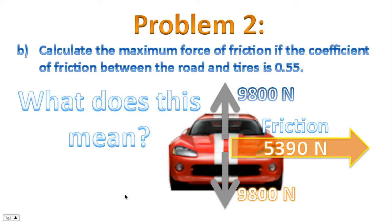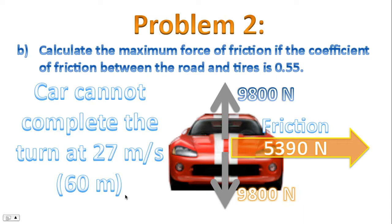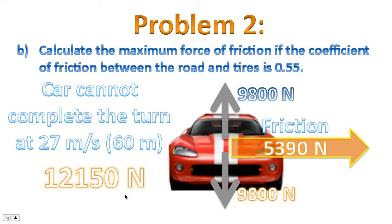What does this mean? The car cannot possibly complete the turn at 27 meters per second for a 60-meter radius — it is physically impossible. To complete this turn the tires would have to exert 12,150 newtons, but the maximum those tires can exert is only 5,390 newtons. We have exceeded the physical limitations of the tires. If you attempt that turn at 27 meters per second with a 60-meter radius, the car will spin out — we've exceeded the maximum available friction of 5,390 newtons.